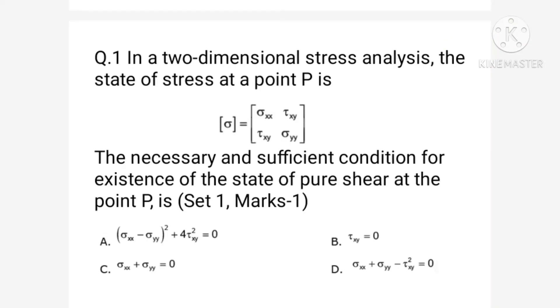Here is the first question. In a two-dimensional stress analysis, the state of stress at a point is sigma equal to values given in a matrix form: sigma xx, tau xy in the first row, tau xy, sigma yy in the second row. The necessary and sufficient condition for the existence of the state of pure shear at the point P is - there are four options that have been given.